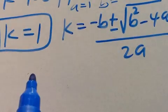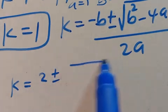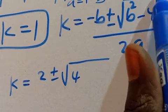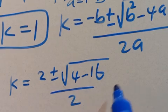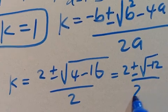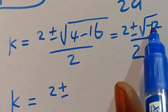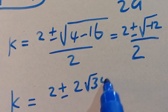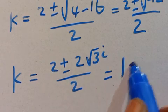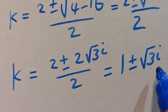When we plug in everything, we have k equals — since b is already minus 2, this becomes plus 2, positive or negative — the square root of minus 2 squared, which is 4, minus 4 times 1 times 4, giving minus 16, all divided by 2. So 4 minus 16 gives minus 12, divided by 2. This gives k equals 2 plus or minus 2 root 3 i, divided by 2, which simplifies to k equals 1 plus or minus root 3 i. This is a complex solution because of the imaginary unit i.